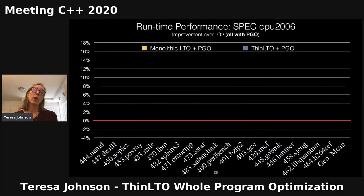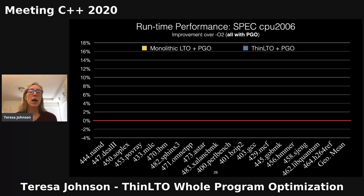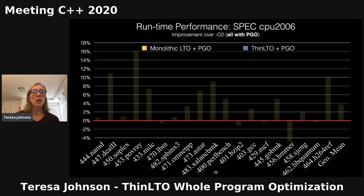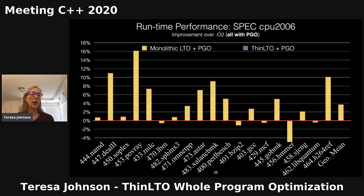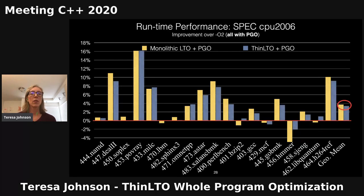Looking at runtime performance using SPEC 2006 benchmarks with O2 as baseline and profile information applied to all configurations: monolithic LTO gets a range of performance improvements depending on the application, and ThinLTO achieves nearly the same performance improvement — within about 2% across the board.